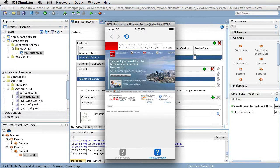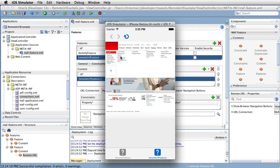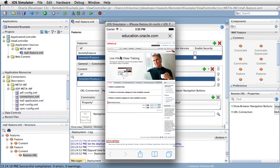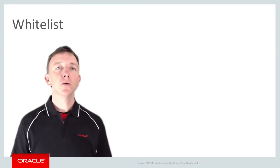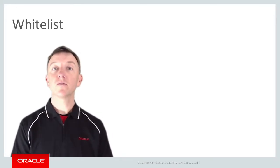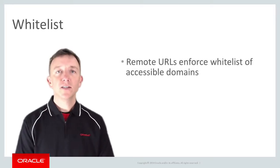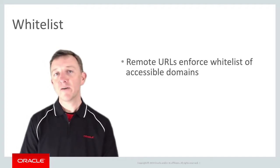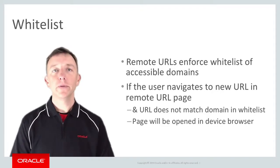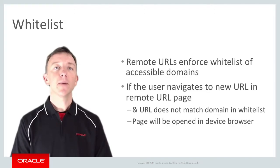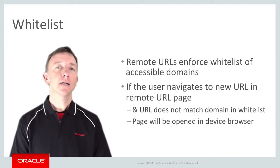Note: if we go to a link in our page that's not included in the automatic whitelist — such as one that goes to training.oracle.com, which is different from www.oracle.com that we defined in the connection — the new page will be opened in the browser of the device rather than in the application. The Remote URL feature enforces a whitelist of domains accessible via our MAF application. If the domain is not found in the whitelist, then for security reasons, MAF will open the URL in the device's browser, leaving the user to think about the security implications.